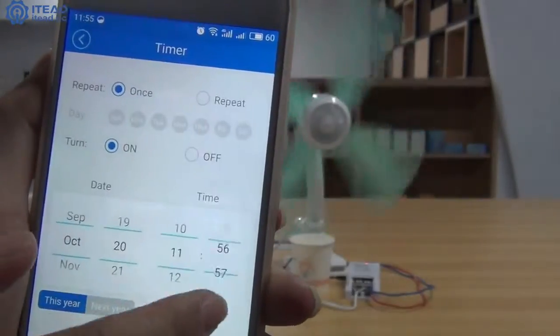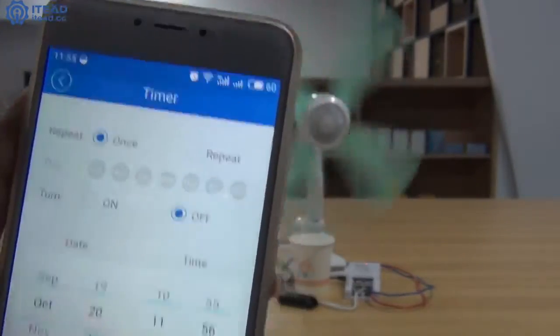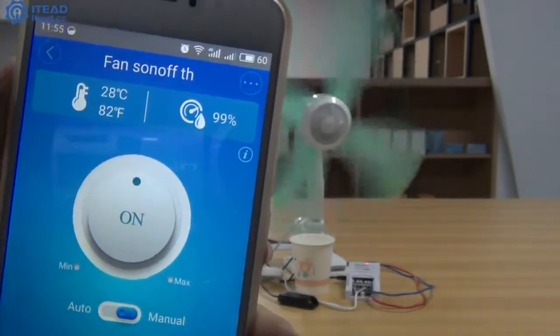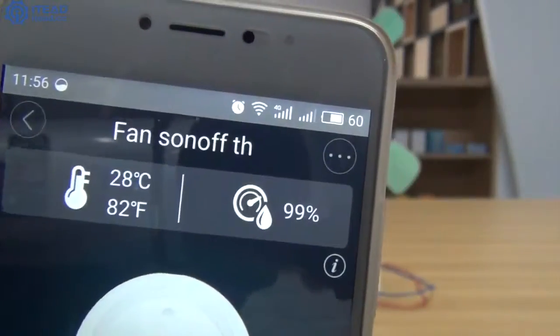Again, I set the shutdown time as 4:12. Look, the fan is off automatically after 1 minute.